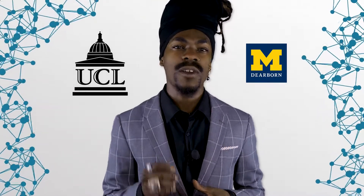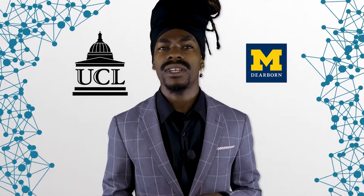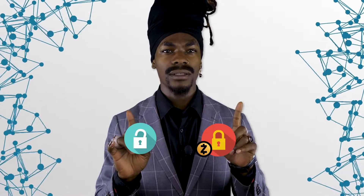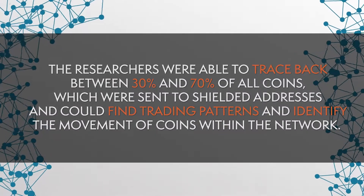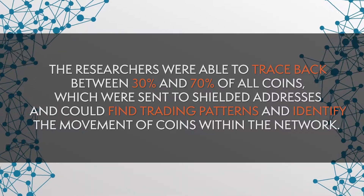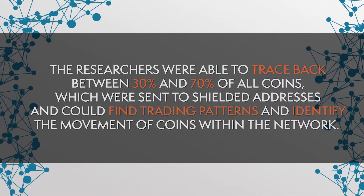As a result of the separation between unshielded and shielded payments, two pools of Zcash coins exist, and the question is what happens when those two pools are mixed up. Two studies — one from University College London and one from University of Michigan Dearborn — have analyzed the privacy of Zcash and concluded, quite alarmingly, that when coins move from unshielded to shielded and then back to the unshielded pool, anonymity is largely compromised. The researchers were able to trace back between 30% and 70% of all coins which were sent to the shielded addresses, and could find trading patterns and identify the movement of coins within the network.